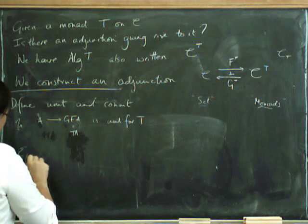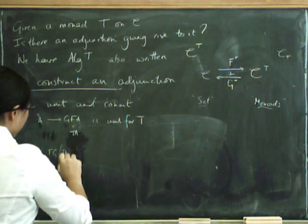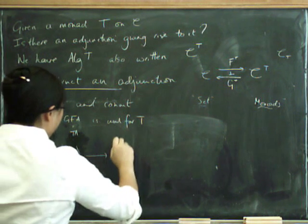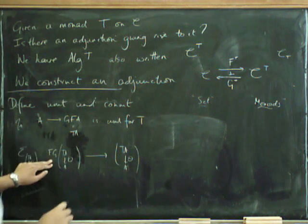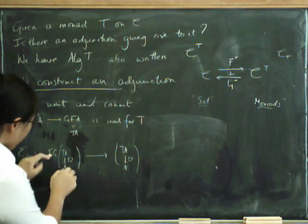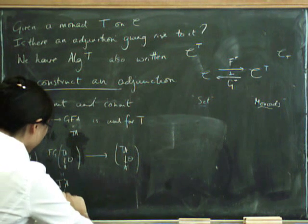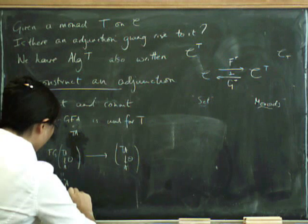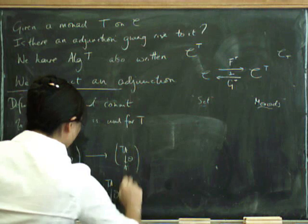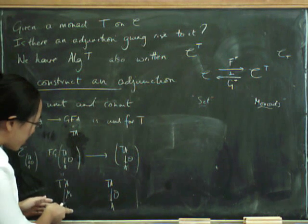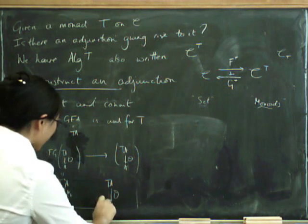And now what about the counit? We need epsilon at some algebra TA to A. It's got to go from FG of this algebra to the algebra. So it's got to be a map of algebras. Now what's this? What's FG of this thing? First you forget down to A and then you do the free thing on it. So it's the free algebra on A, which is given by mu like this. What's this? Well, that's just that. So what possible morphism could there be going from there to there? Well, fancy that. We could put theta in here.